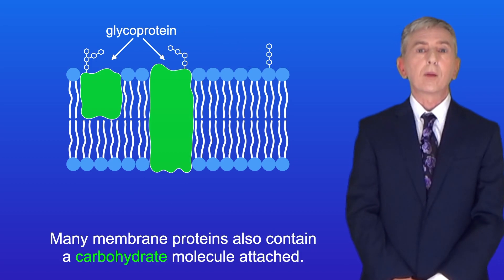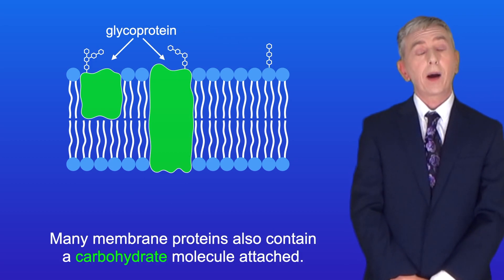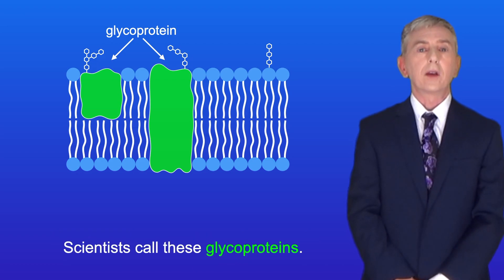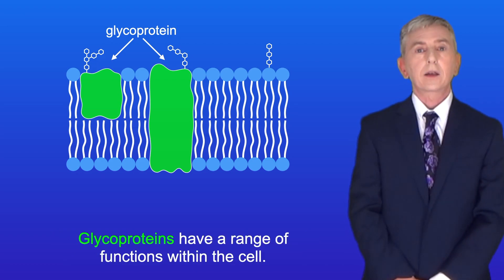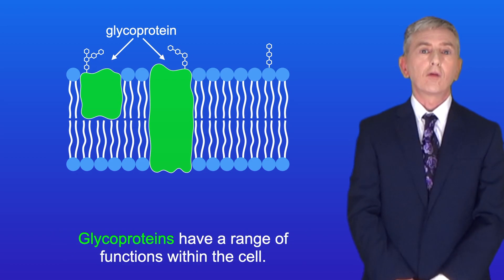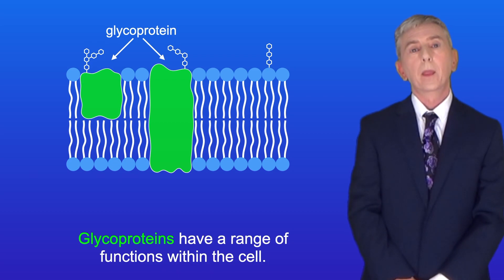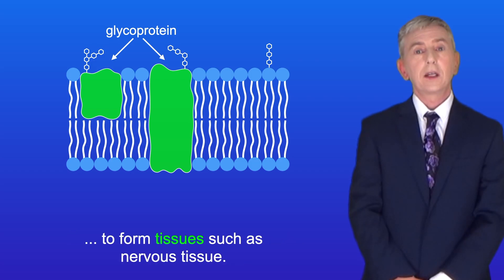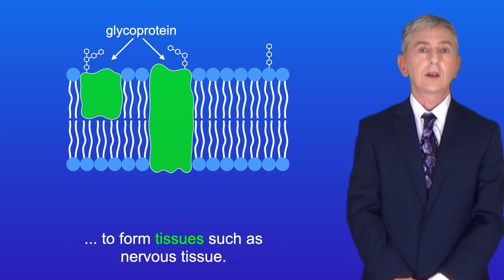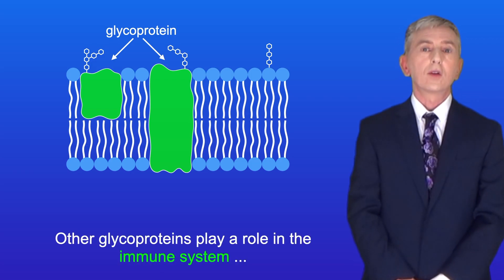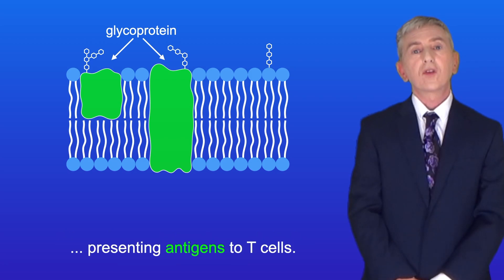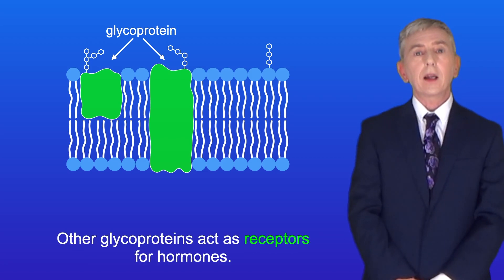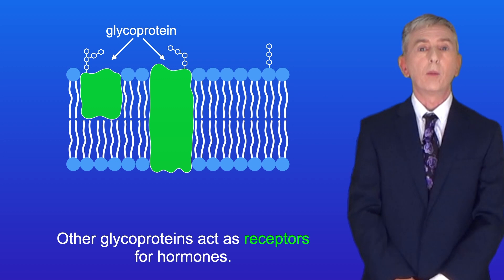Many membrane proteins also contain a carbohydrate molecule attached. Scientists call these glycoproteins, and glycoproteins have a range of functions within the cell. Some glycoproteins allow cells to attach to each other to form tissue such as nervous tissue. Other glycoproteins play a role in the immune system, presenting antigens to T cells. And other glycoproteins act as receptors for hormones.